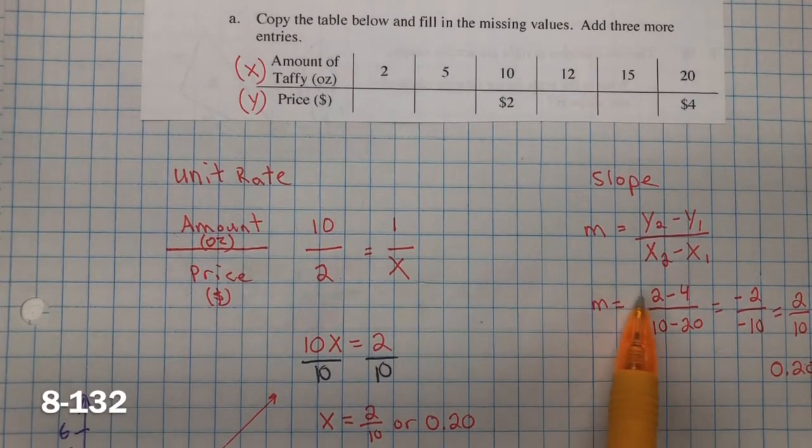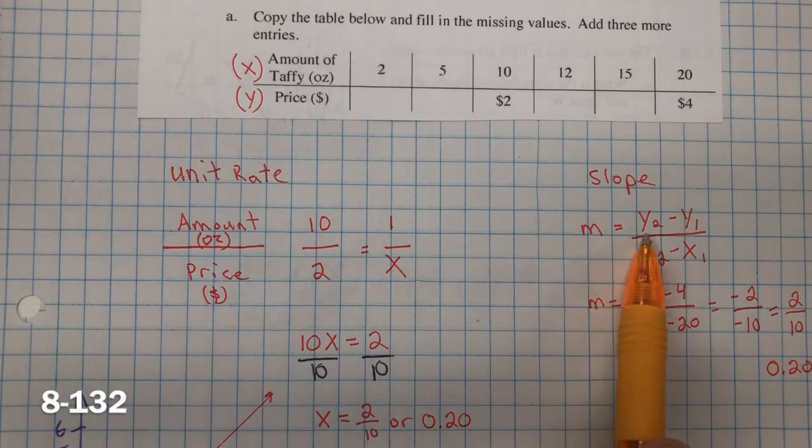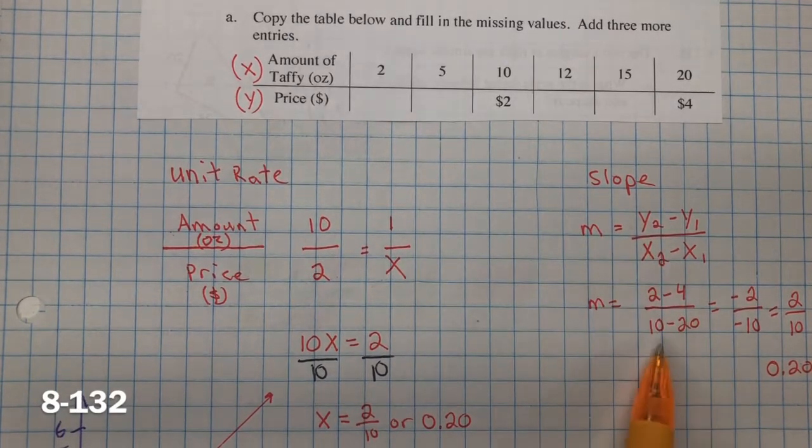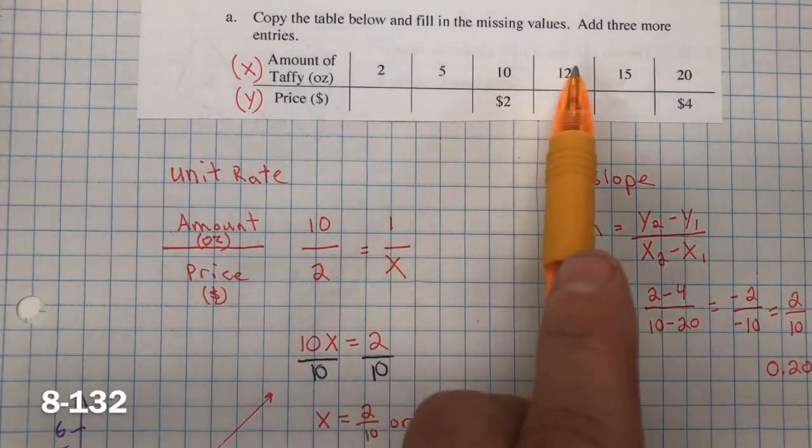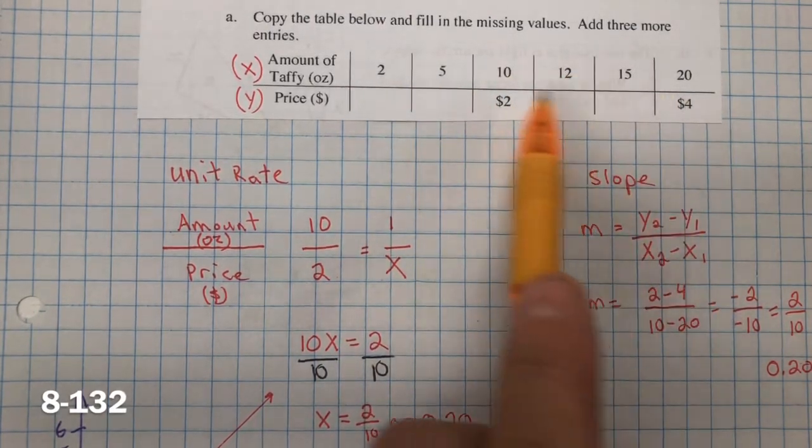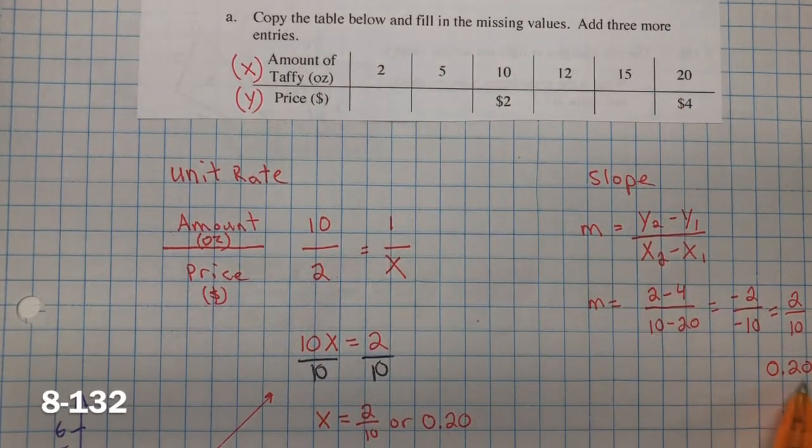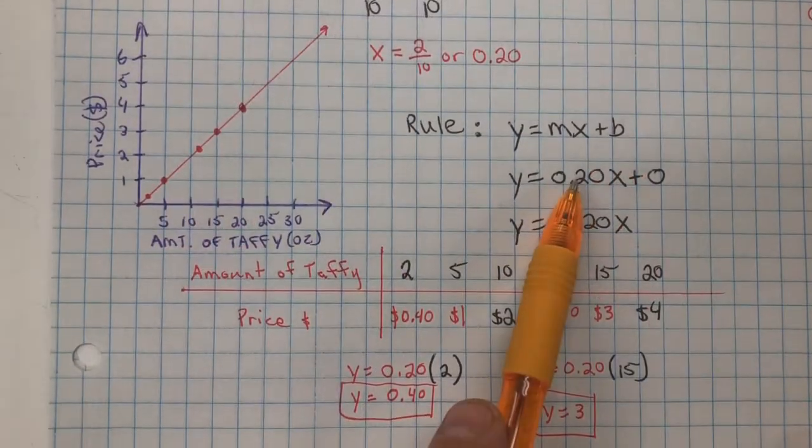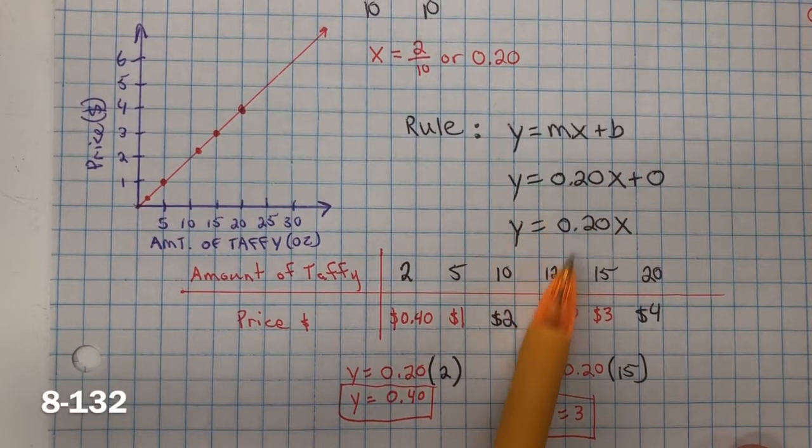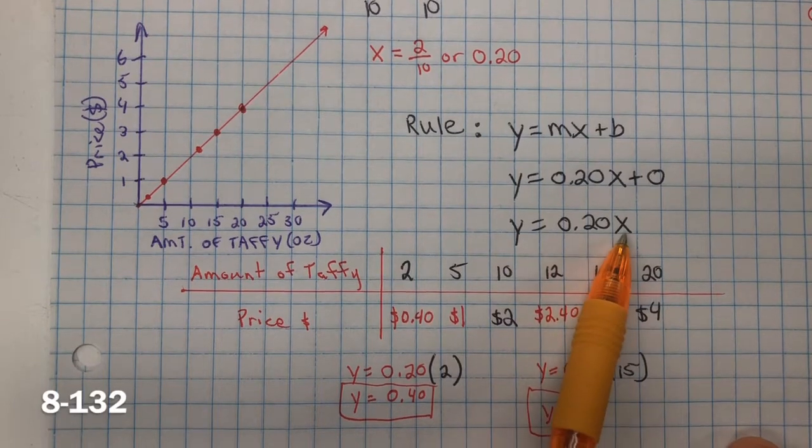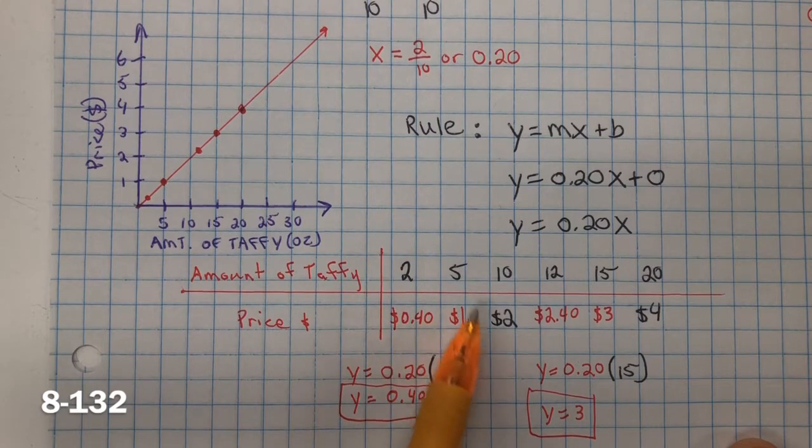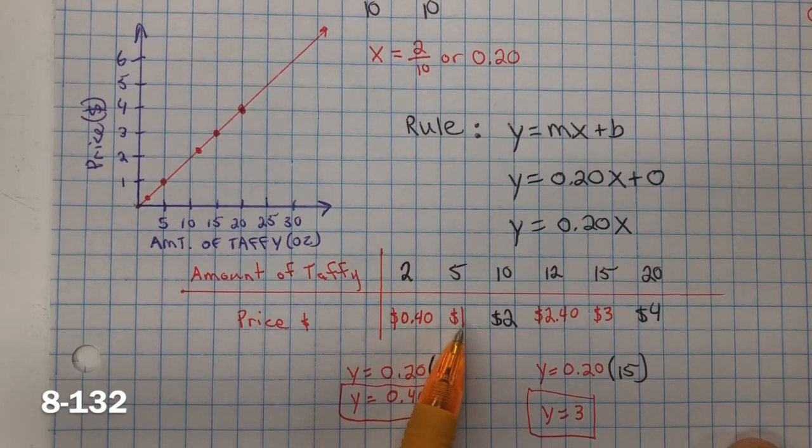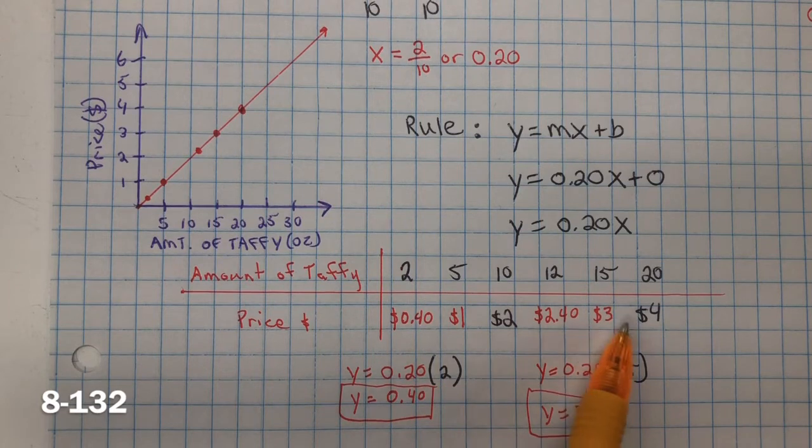The other way is by finding the slope, or rate of change, which when we do it, the rate of change, the difference of the y's, the difference of the y's for 2 minus 4 and 10 minus 20, we still end up getting 20 cents. So now that we know it's 20 cents per ounce, 2 ounces is 40 cents, 5 times 20 cents is $1, and so forth.